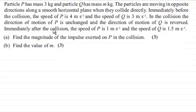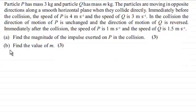In the collision, the direction of motion of P is unchanged and the direction of motion of Q is reversed. Immediately after the collision, the speed of P is 1 m per second and the speed of Q is 1.5 m per second. In part A, we've got to find the magnitude of the impulse exerted on P in the collision for 3 marks. And in part B, find the value of m for 3 marks.